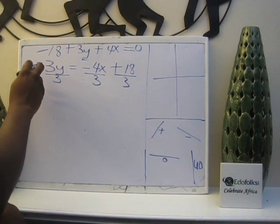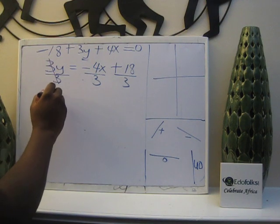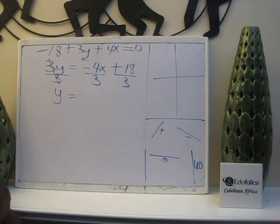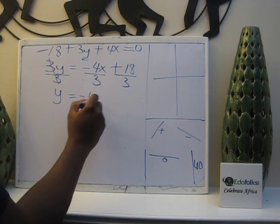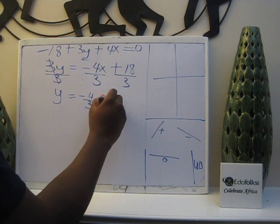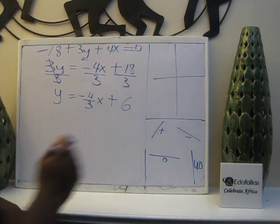Positive 3. If it was a negative, I'd divide everything by negative 3. So 3 cancels 3, and I have my y. That's what I wanted, y by itself. And I have a negative 4 over 3x, and plus 18 divided by 3 is 6.